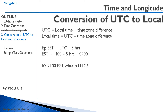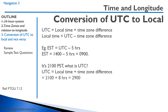Here's another question. It's 2100 Pacific Standard Time. What is the UTC? The UTC is the local time plus the time zone difference. So 2100 plus 8 hours will be 2900. Of course, you can only have 24 hours in a day, so it would be 0500 the next day — 29 minus 24.